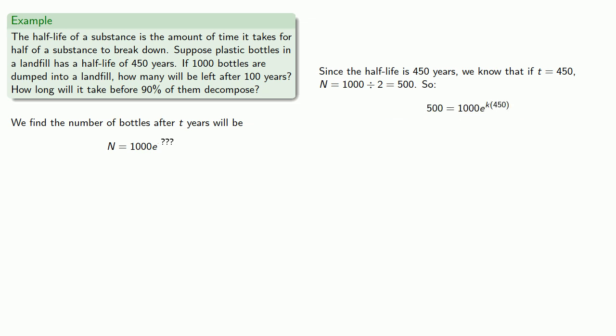We can solve that for the unknown value of k, which works out to be about negative 0.00154. That gives us our function that tells us the number of bottles after t years.